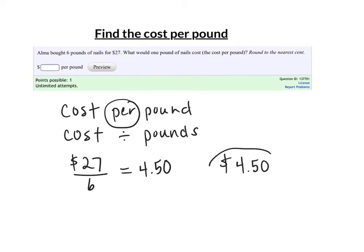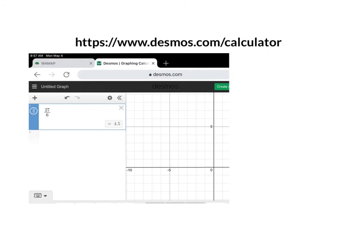As far as the calculator, remember that desmos.com is a great calculator. So take your browser on your Chromebook and go to https://www.desmos.com/calculator, and punch in 27 divided by 6. Right here you can see the answer was $4.50.